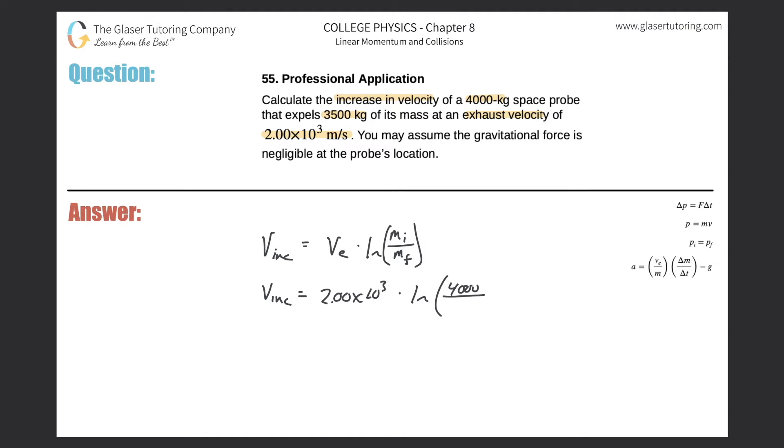Now, just here's the trick, right? It expels, meaning it gives off 3,500 kilograms of its mass. So if it started at 4,000 and gave up or gave off 3,500, how much is left? That's right, 500.